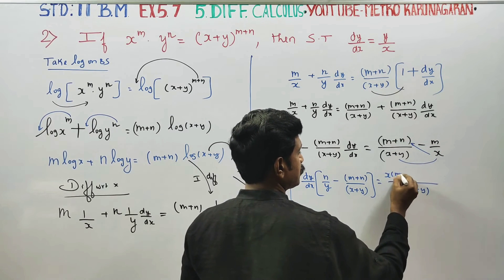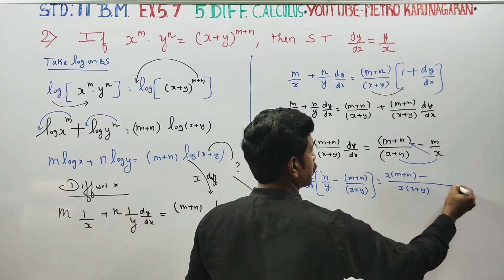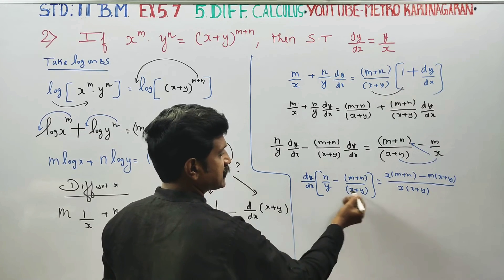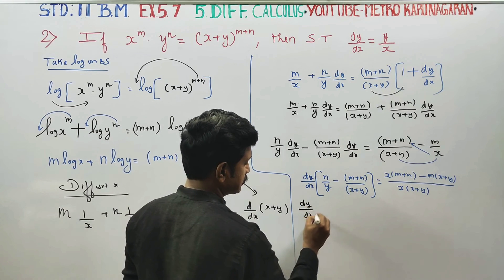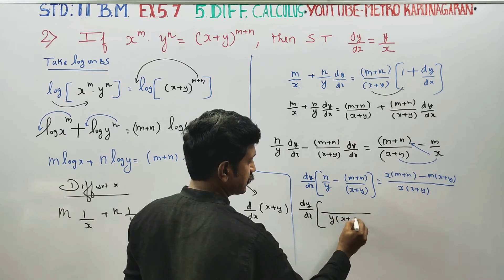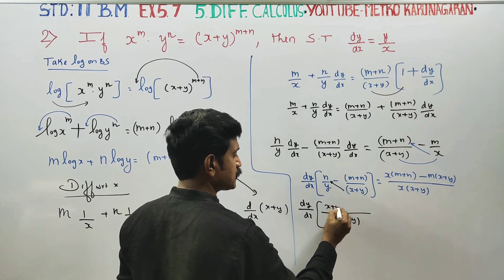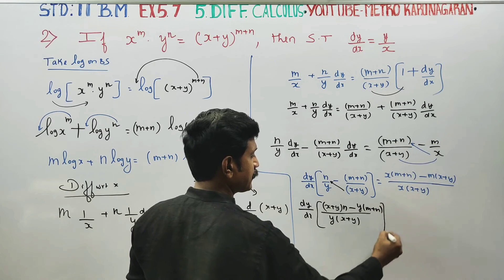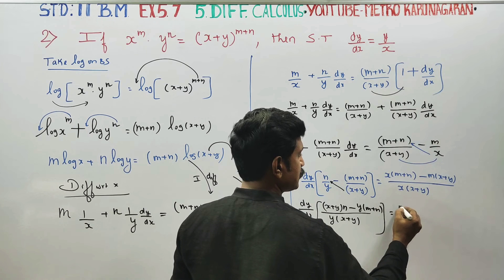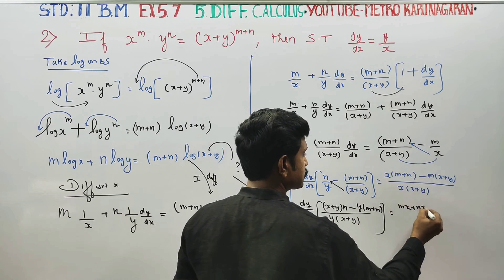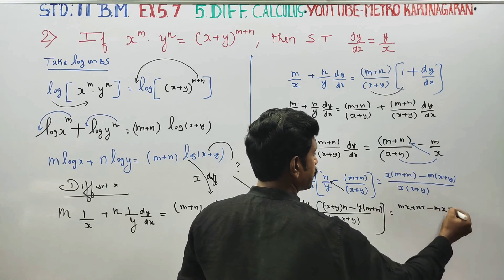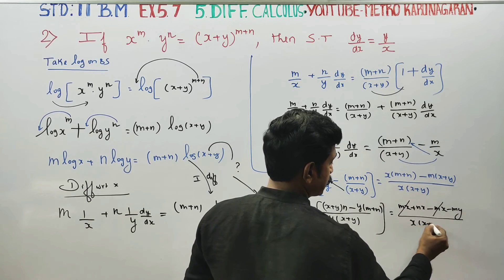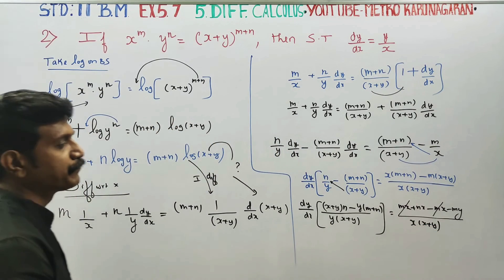Cross multiplying: x into m plus n minus x plus y into something. Expanding the numerator: mx plus nx minus mx minus my. The mx terms cancel. The denominator is x times x plus y. Now I will clean the board.